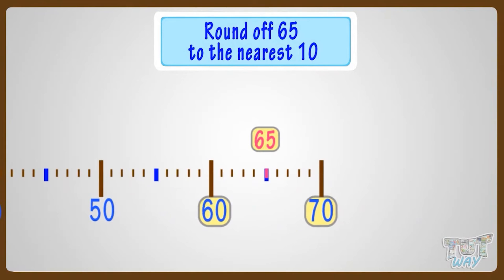And we know if the number is on the 5 mark or above 5 mark, we round it up. So we will round it up to 70.